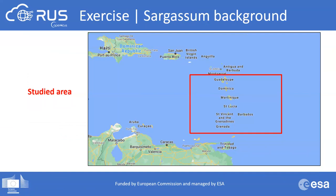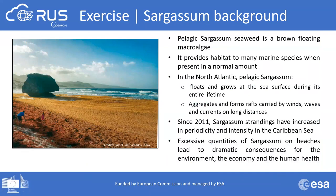For today's exercise, we are going to map Sargassum rafts in the Caribbean. Our area of interest is indicated by the red rectangle on screen. If you are not familiar with Sargassum and the societal issues it has caused in recent years, I will first give some background before moving to the practical part.